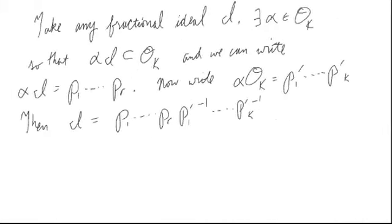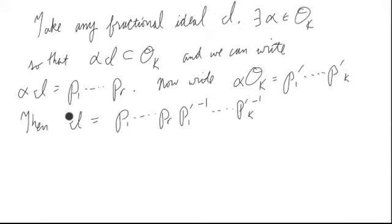We can extend this uniqueness to fractional ideals. Given any fractional ideal F with alpha in OK such that alpha·F is an ideal in OK, we can write alpha·F as a product of primes and also write alpha·OK as a product of primes. Then F is their ratio — a product of primes possibly raised to negative powers. So every fractional ideal can be written as a product of prime ideals with integer exponents, completing the proof of unique factorization.